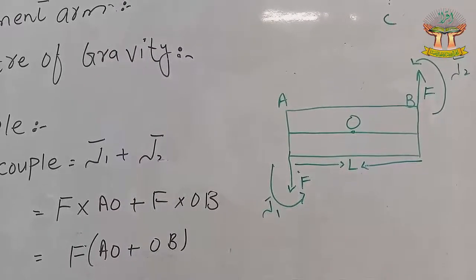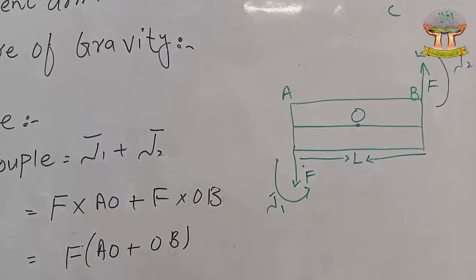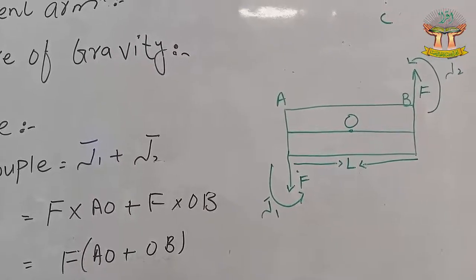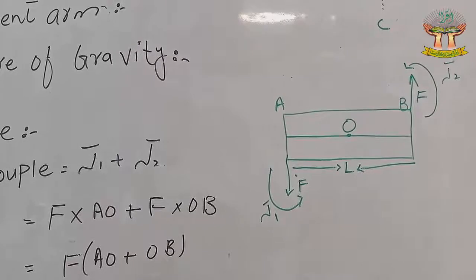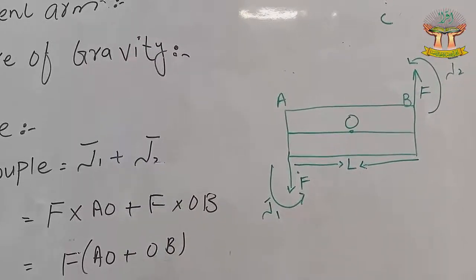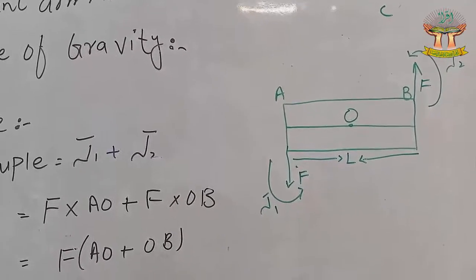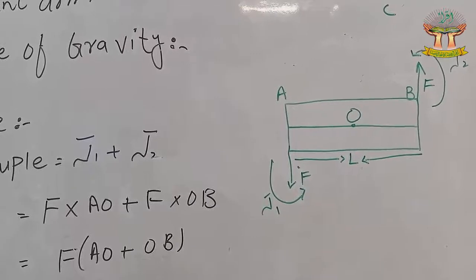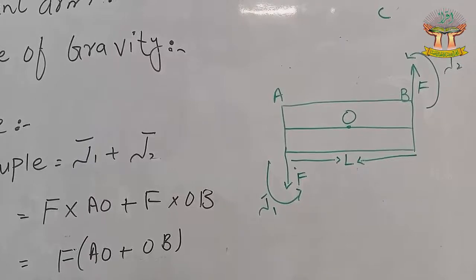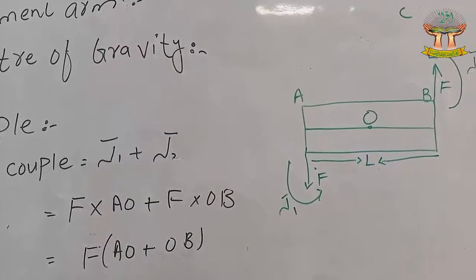The couple equals force F applied at point A multiplied by distance AO, plus force F multiplied by distance OB. Tau 1 has value OA and tau 2 has value OB. Combining both, the equation becomes: Couple is equal to F multiplied by L, where F is the force and L is the perpendicular distance between the two forces.